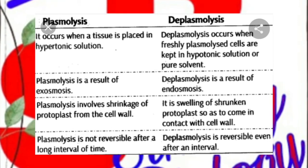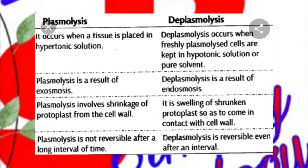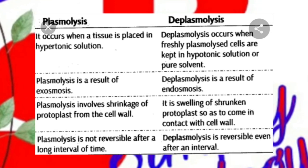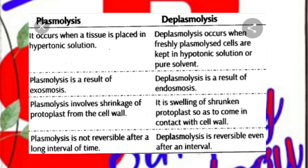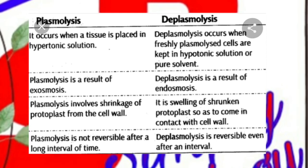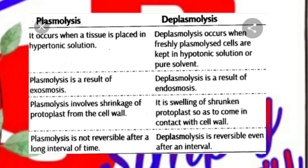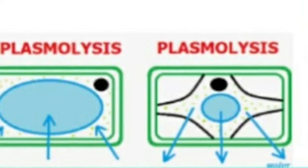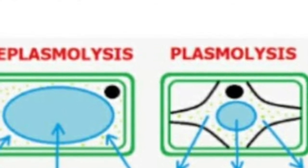In plasmolysis, it involves a shrinkage of protoplasm from the cell wall; in deplasmolysis, it is a swelling of shrunken protoplasts. Plasmolysis is not reversible after a long interval of time; deplasmolysis is reversible even after an interval. Here you can see a major difference in the cells of a deplasmolysis cell and a plasmolysis cell.